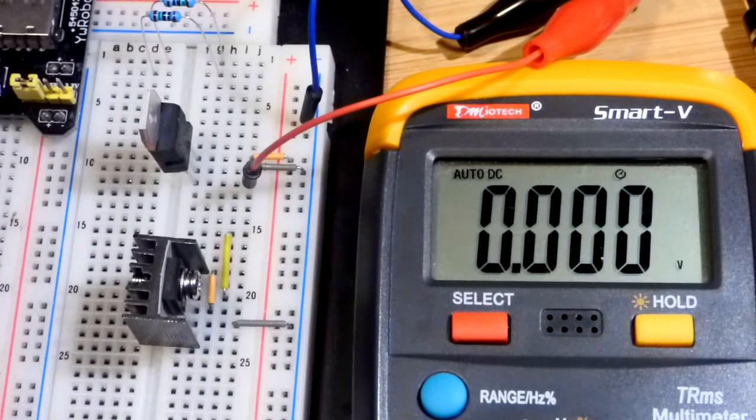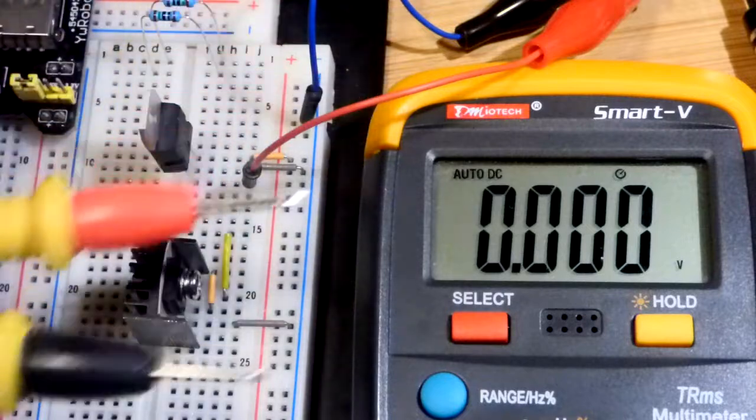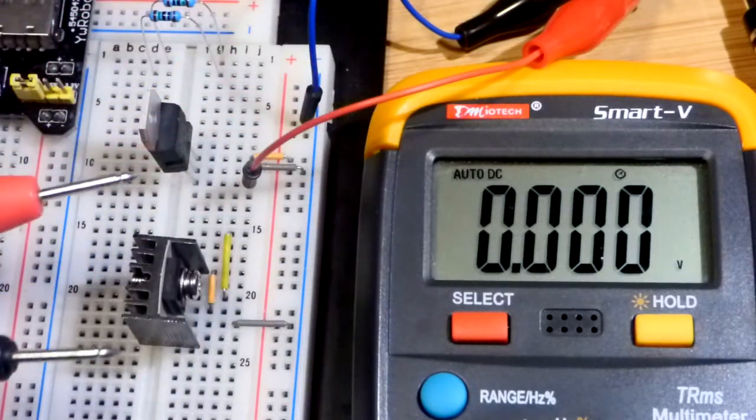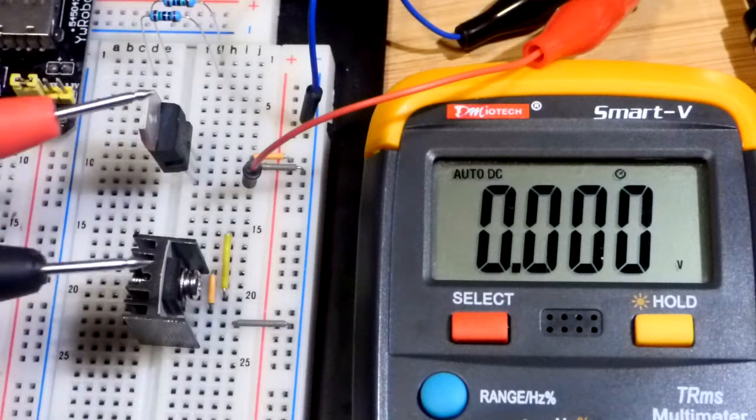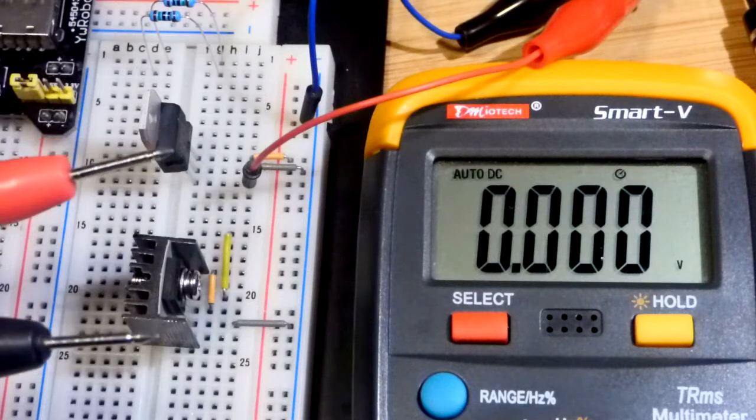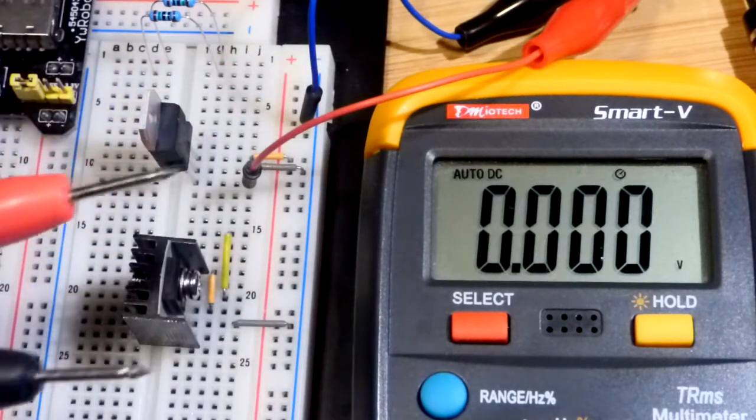With 10 volts coming in, unfortunately we have 1 amp of current also coming in in order to get that 1 amp of current out. And so that is 10 watts of power.